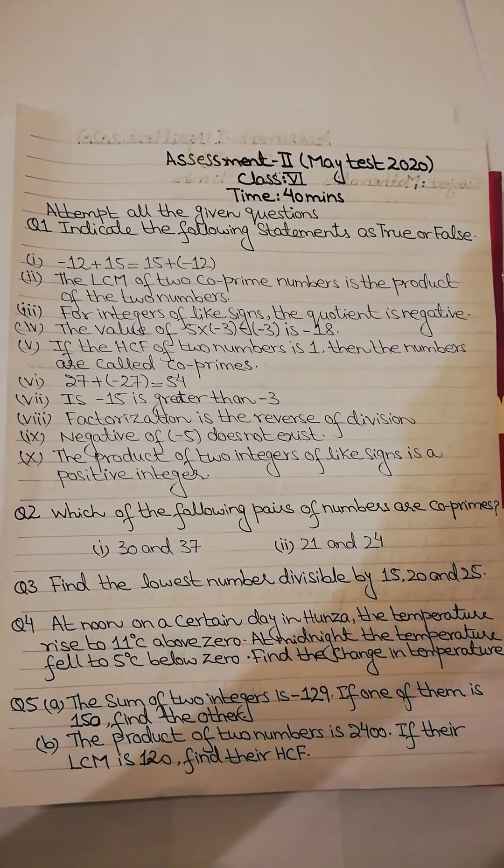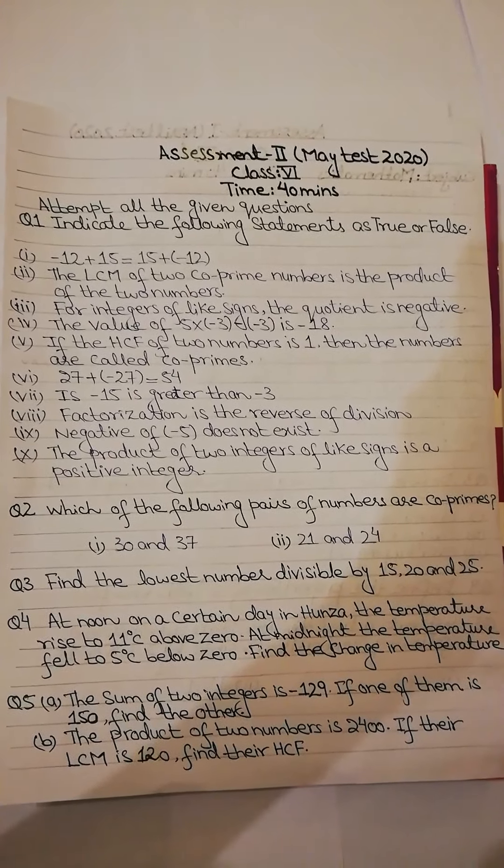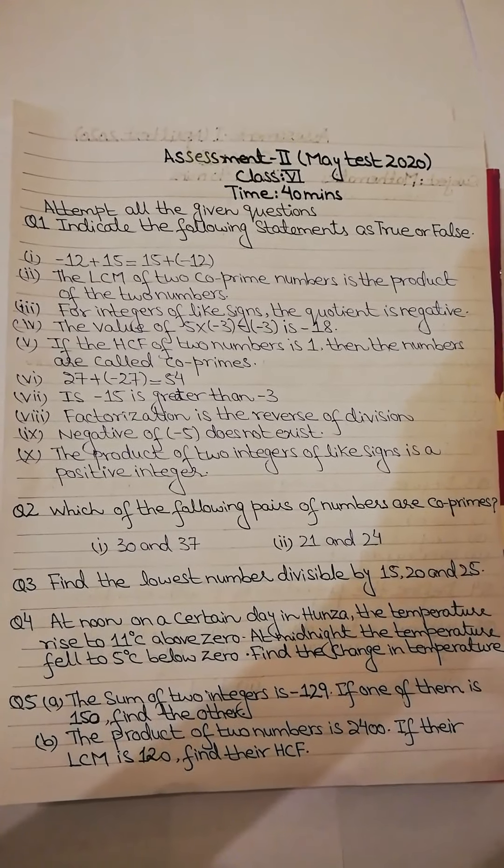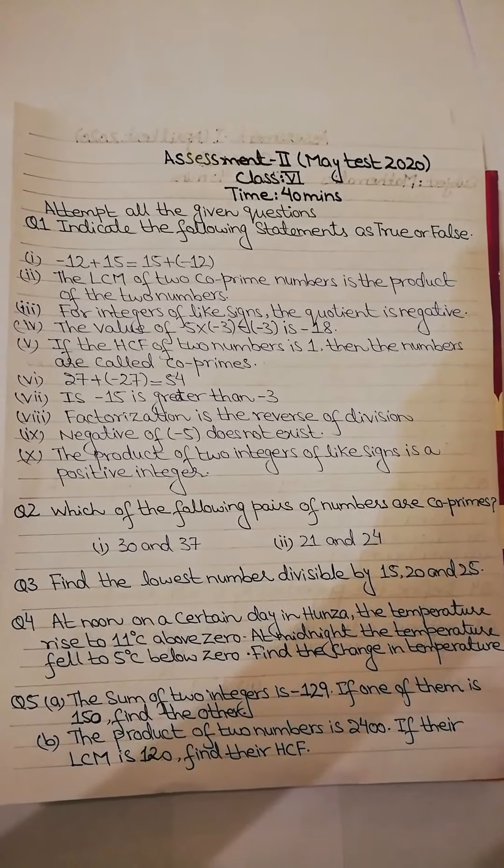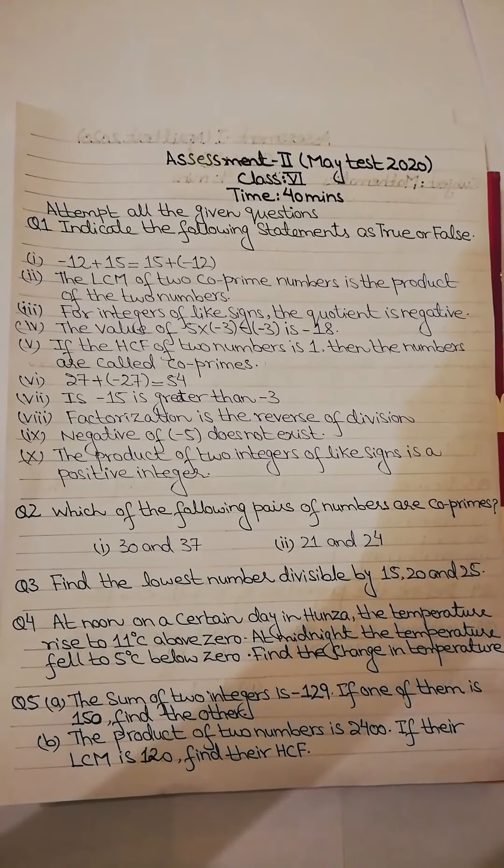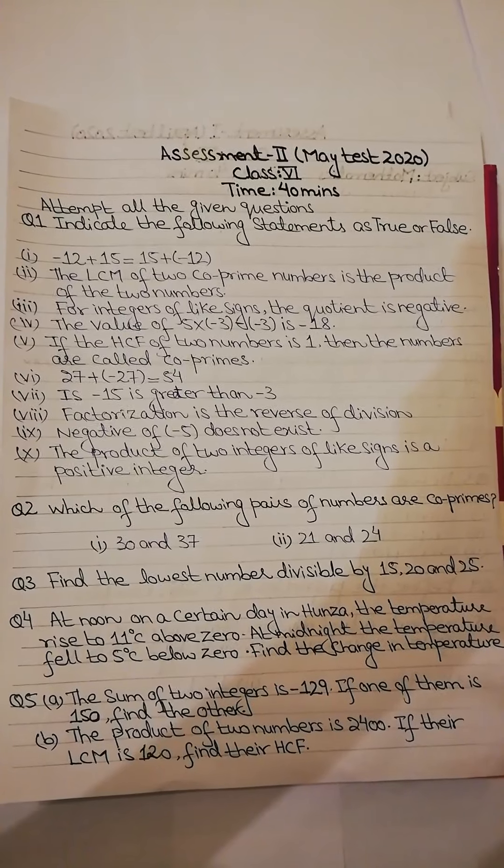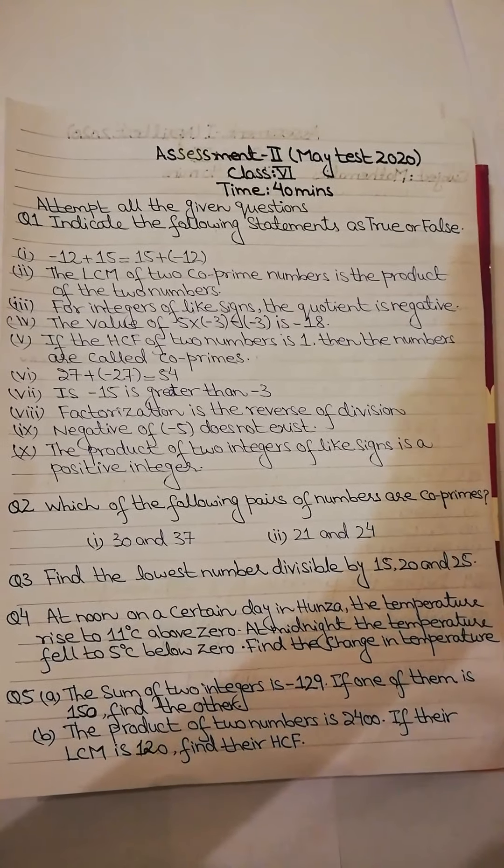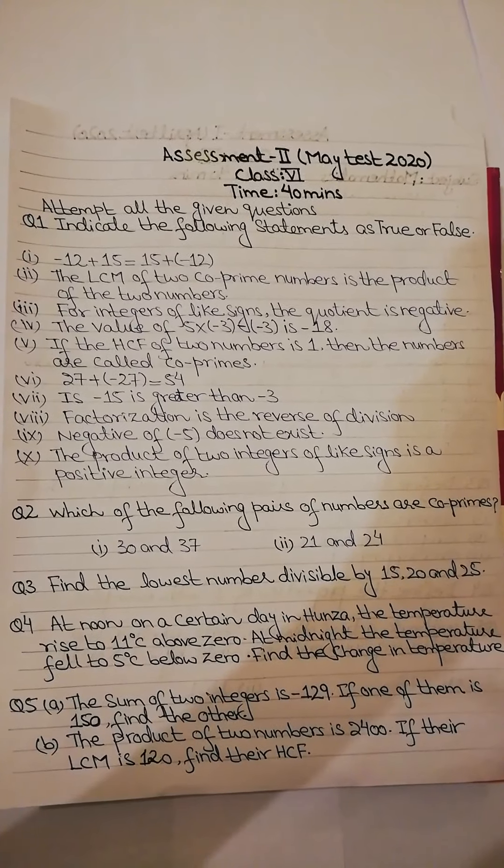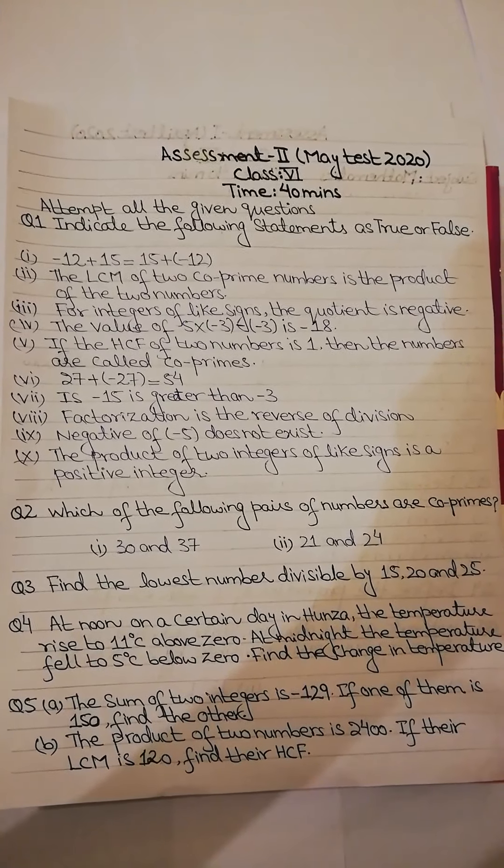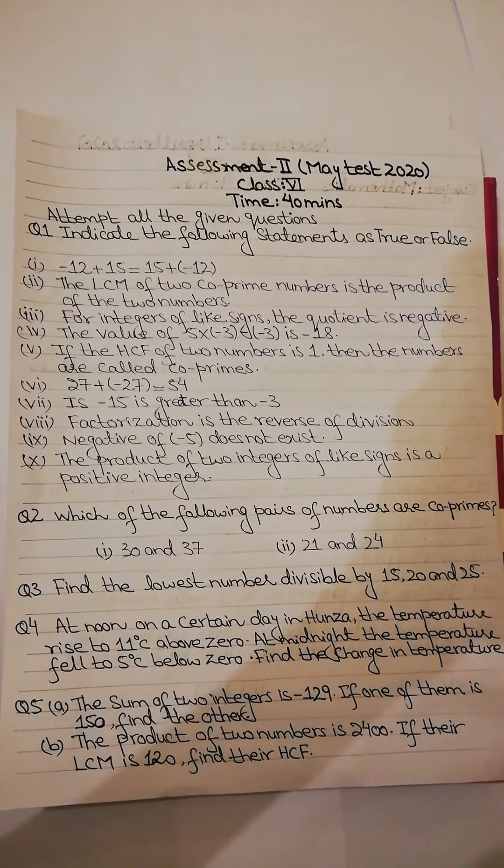First is minus 12 plus 15 is equal to 15 plus minus 12. If this is true, then you have to write it as true, and if it is false, then you have to write it as false. Second, the LCM of 2 prime numbers is the product of 2 numbers. Third, for integers of like signs, the quotient is negative. Fourth, the value of 5 multiplied by minus 3 minus minus 3 is minus 18.